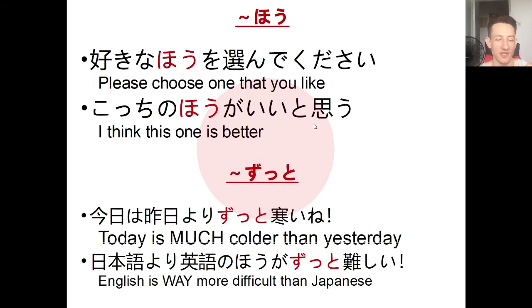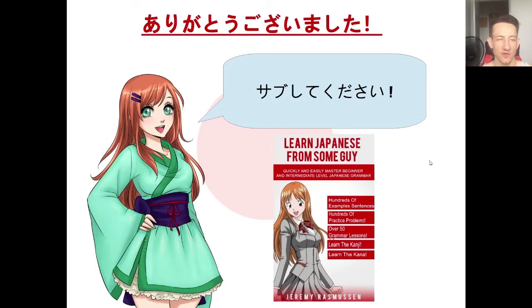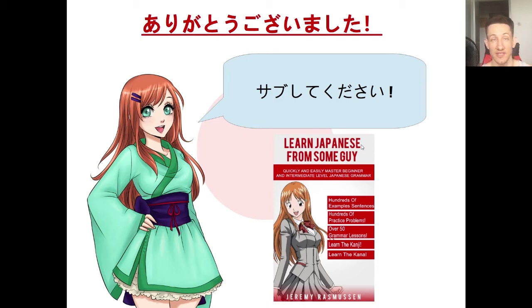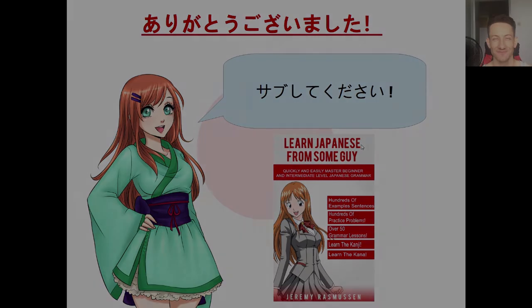That's it for today - using ho to describe something you like or indicate a direction, like suki na ho and kochira no ho, and using zutto to describe an extreme case, like zutto samui or zutto muzukashii. Thank you for liking, watching, and subscribing. If you want to learn more in-depth Japanese grammar, check out my book on Amazon - the link is in the description. See you next week for another beginner Japanese lesson. Mata ne!